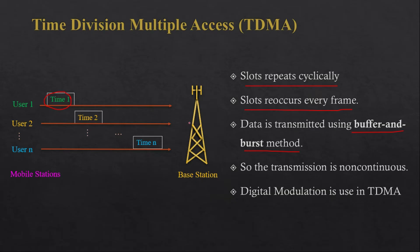Data is transmitted using a buffer and burst method. We are not continuously transmitting information — we transmit data in bursts, meaning multiple messages at once. This is a non-continuous transmission. Since we are transmitting digital data in TDMA, we require digital modulation, unlike FDMA where analog data was transmitted.